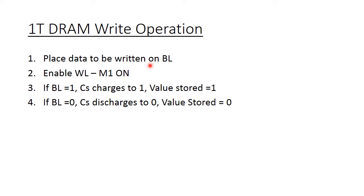To summarize the write operation: first, place the data to be written on the bit line BL. Next, enable the word line — transistor M1 turns on. If BL equals 1, the capacitor charges to VDD minus VTN, storing a value of 1. If BL equals 0, the capacitor discharges to 0, storing a value of 0. The write operation is straightforward. Next, we will look at the read operation.